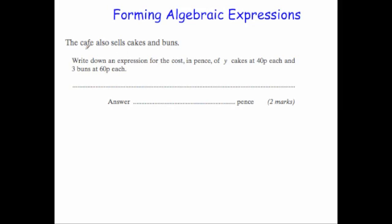Our next example. A cafe also sells cakes and buns. Write down an expression for the cost in pence of y cakes at 40p each and three buns at 60p each. Well y cakes at 40p each, their total cost would be 40 times y, 40y.